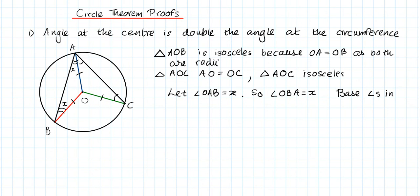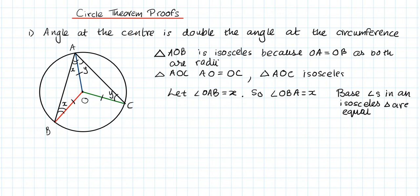We can do the same for the other triangle. We'll call this angle y, so angle OCB equals y and angle OAC is also equal to y. Again, base angles in an isosceles triangle are equal.